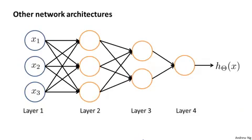But just to point out, you can have neural networks with other types of diagrams as well. And the way that neural networks are connected, that's called the architecture. So the term architecture refers to how the different neurons are connected to each other. This is an example of a different neural network architecture. And once again, you may be able to get this intuition of how the second layer, here we have three hidden units that are computing some complex function maybe of the input layer. And then the third layer can take the second layer's features and compute even more complex features in layer three. So that by the time you get to the output layer, layer four, you can have even more complex features of what you were able to compute in layer three. And so you get very interesting nonlinear hypotheses.